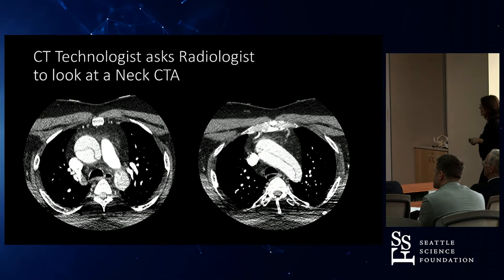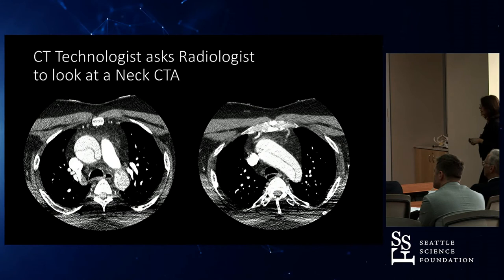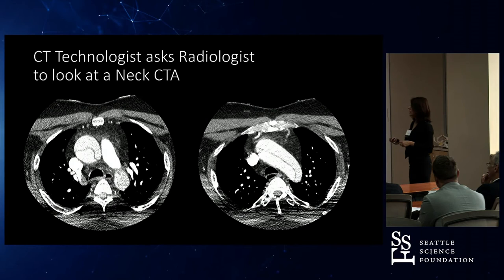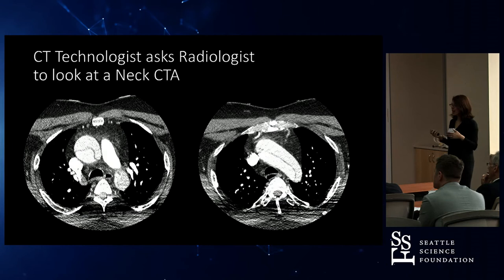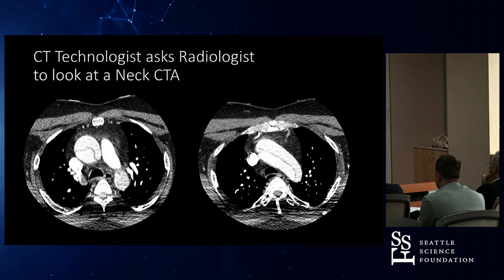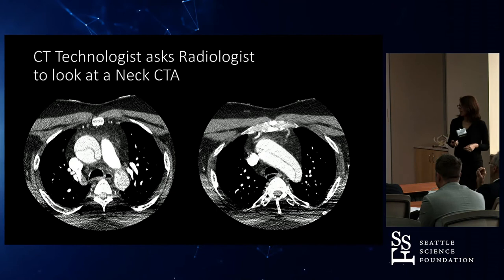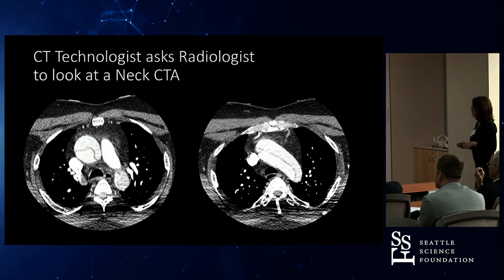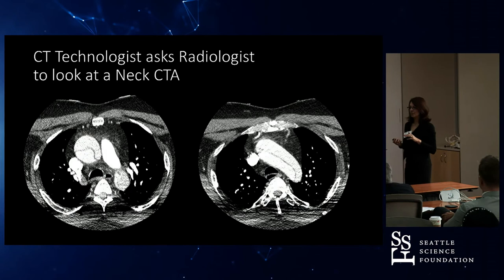I was at Swedish Redmond, and the CT technologist — actually, I had talked with the ER doctor about this case. She said, I've got a patient with neuro symptoms who also has some arm symptoms and a cold arm now. What should we do? Okay, let's start with the CTA of the neck and go from there. The CT tech calls me — he wasn't aware of this conversation — and he says, Doc, you need to come right now. When people say that, I come.